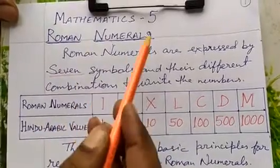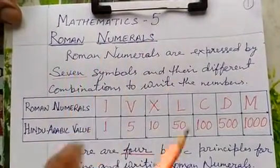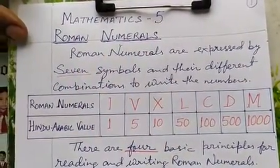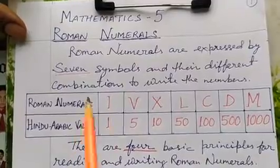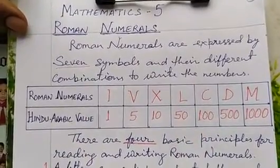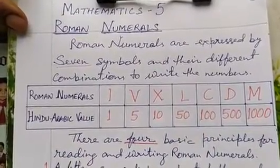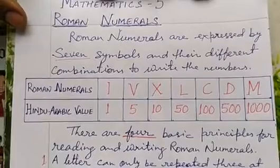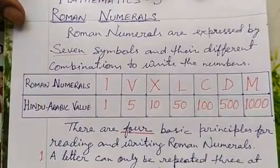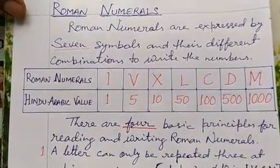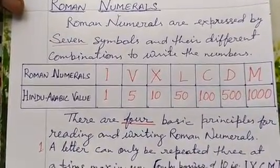Hello students. This is a mathematics class on Roman numbers. We are going to learn about them. Roman numbers are expressed by 7 symbols — these are letters of the English alphabet used in different combinations to write numbers.